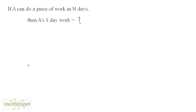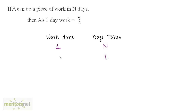If A can do a piece of work in n days, then what is A's one day work? We have two quantities here: work done and time taken. Let us assume the complete work done in n days is 1. The days taken are n days. We have been asked what is A's one day work, so the days taken is 1. Let A's work done be x. This is a direct proportion because the more work done, the more days taken. So we can equate these ratios and get x = 1/n. The work that A does in one day is equal to 1/n.